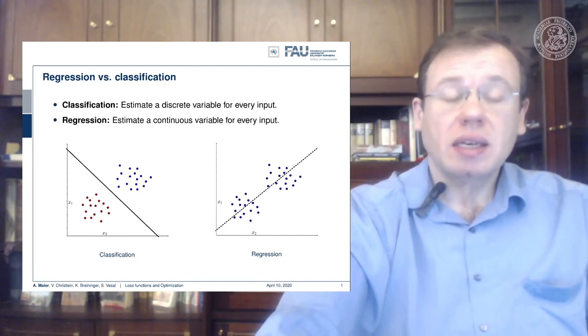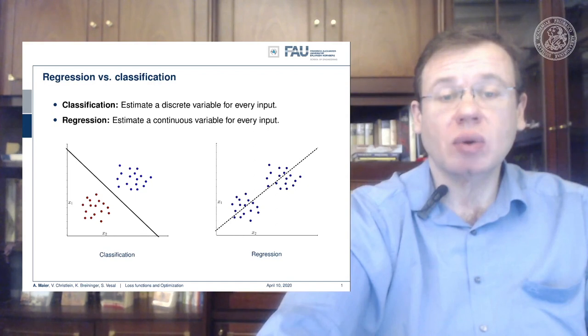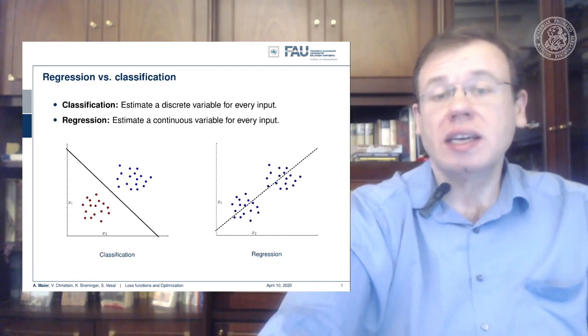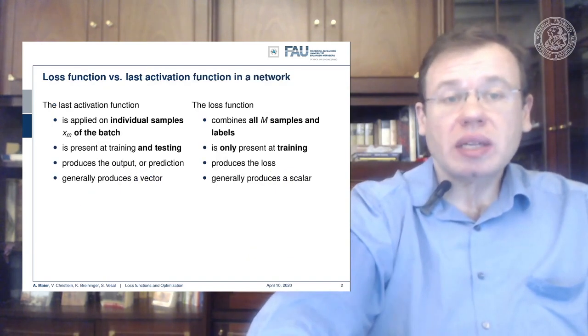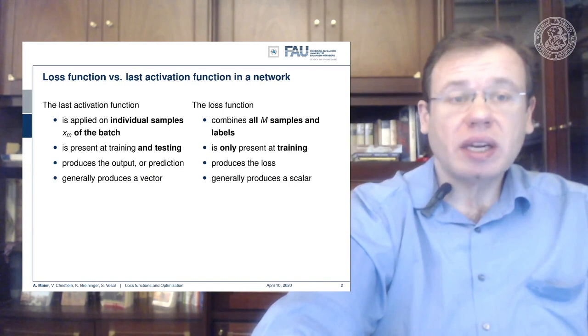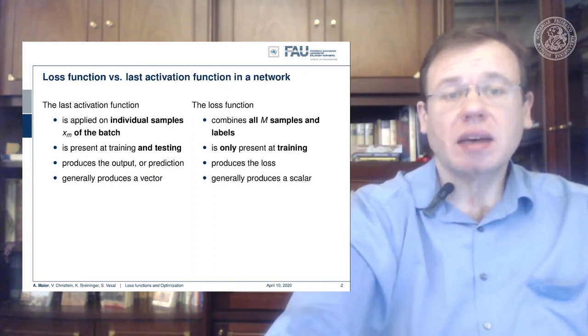You need to model a decision boundary. In regression, the idea is that you want to model a function that explains your data. You have some input function, let's say x2, and you want to predict x1 from it. You compute a function that will produce the appropriate value of x1 for any given x2. Here in this example, you can see this is a line fit.